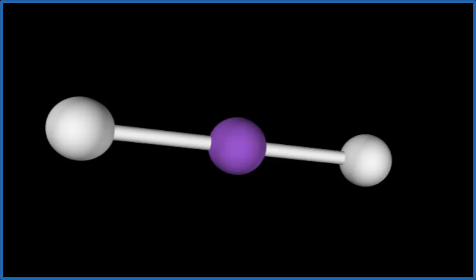And you get this linear molecular geometry. And because there are no lone pairs, the electron geometry and the molecular geometry are the same. They're both linear. Bond angle of 180 degrees.